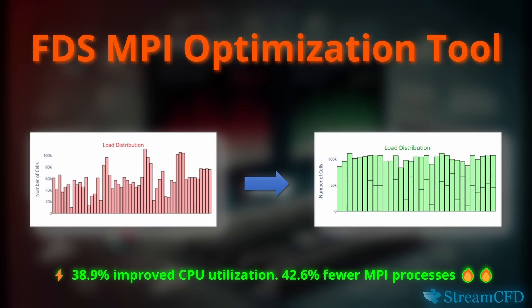This innovative tool enhances FDS efficiency by redistributing meshes across MPI processes in the most optimal way. It overcomes the common limitation of aligning mesh count with available logical processors, which is especially valuable for complex geometries and large-scale simulations where multiple meshes often exceed CPU availability.